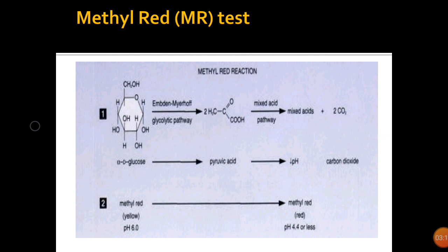The next test is the Methyl Red test, which determines whether the microbe performs mixed acid fermentation when supplied with glucose. The type and proportion of fermentation products produced by anaerobic fermentation of glucose is one of the key taxonomic characteristics that help differentiate various genera of enteric bacteria. In mixed acid fermentation, three acids — acetic acid, lactic acid, and succinic acid — are formed in significant amounts.